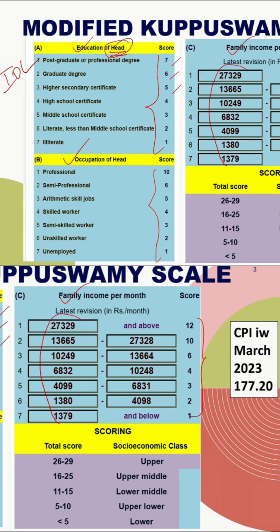The income will be revised based on the recent Consumer Price Index update. You will usually get an updated modified Kuppuswamy scale based on this CPI. The recent version used here is for March 2023. Based on this, the classification cutoffs will be as shown. Online calculators are available for this modified Kuppuswamy scale.